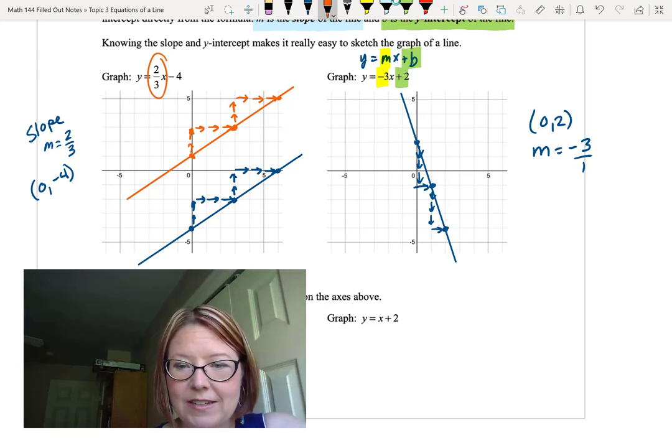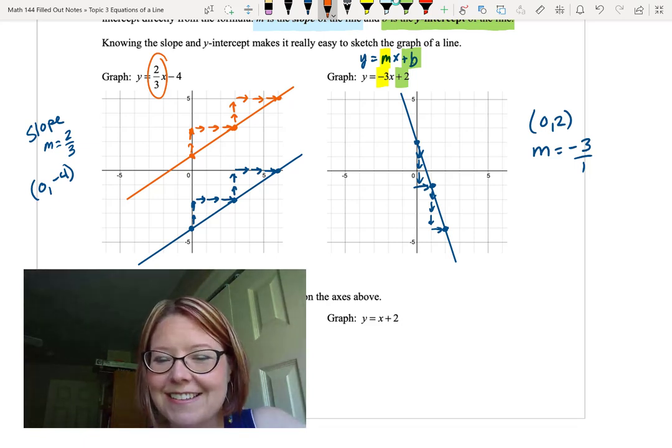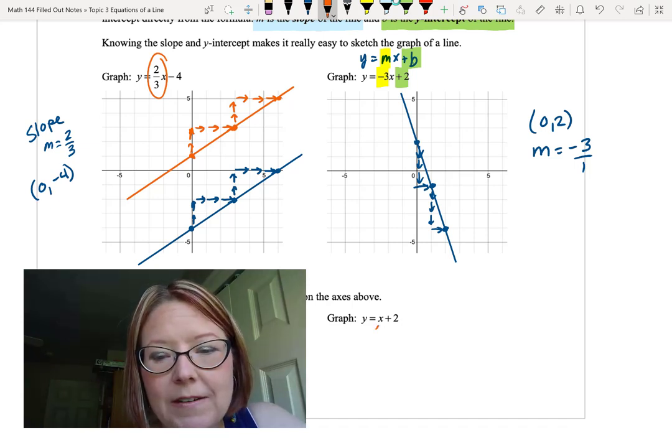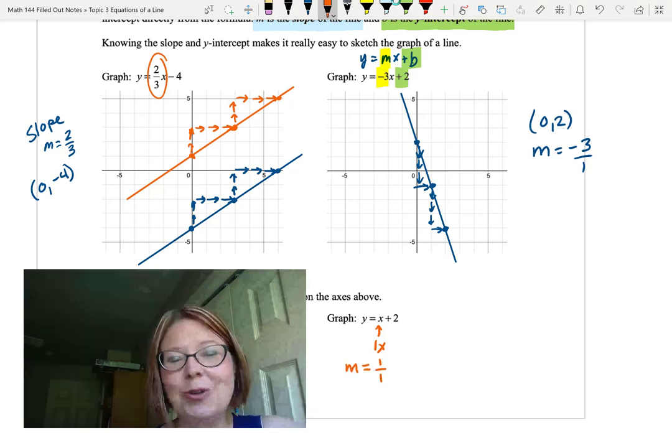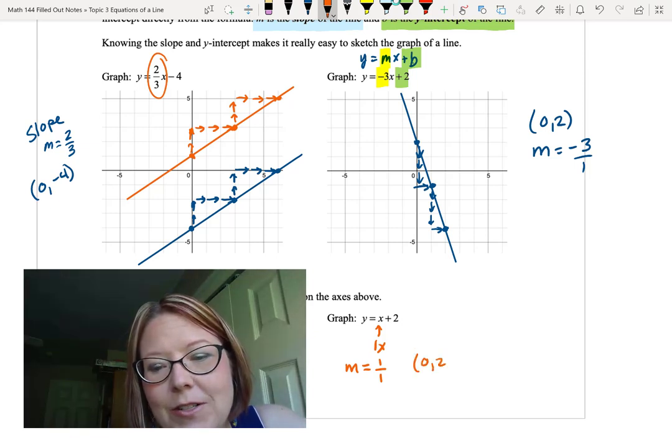Our second one is y equals x plus 2. Hopefully you figured out the trick in this, which is that if there's nothing in front of the x, the coefficient's actually 1, 1x. So our slope here is 1, or we could say 1 over 1, a rise of 1 and a run of 1. Then our y-intercept is 0 comma 2.